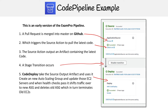We have this source stage, which has an action where it's using the source action as GitHub. So when a pull request is merged into master on GitHub, it's going to trigger the source action to pull the latest code. And once it pulls that code, the source action is going to output an artifact containing the latest code.